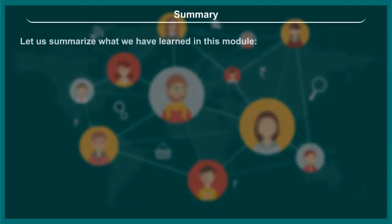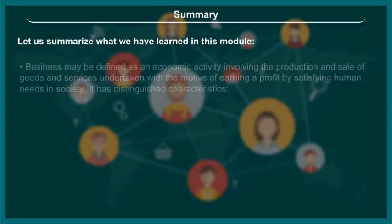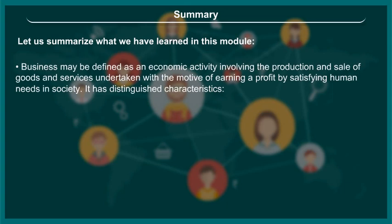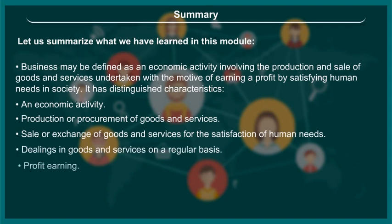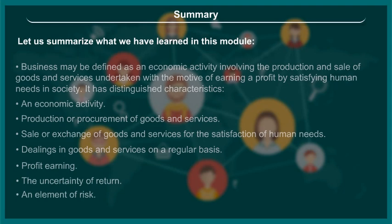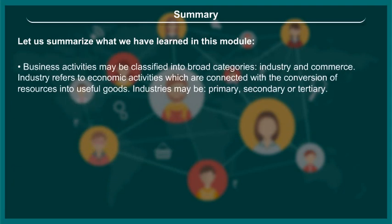Summary: business may be defined as an economic activity involving the production and sale of goods and services undertaken with the motive of earning a profit by satisfying human needs in society. It has distinguished characteristics: an economic activity; production or procurement of goods and services; sale or exchange of goods and services for the satisfaction of human needs; dealings in goods and services on a regular basis; profit earning; uncertainty of return; and an element of risk.